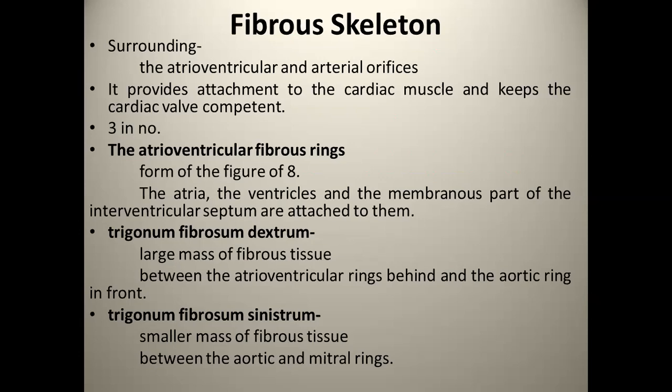Next होता है Trigonum Fibrosum Sinistrum. ये smallest fibrous tissue होता है, जो Aortic और Mitral ring के बीच में होता है. इस प्रकार Fibrous Skeleton का निर्माण होता है Heart में.